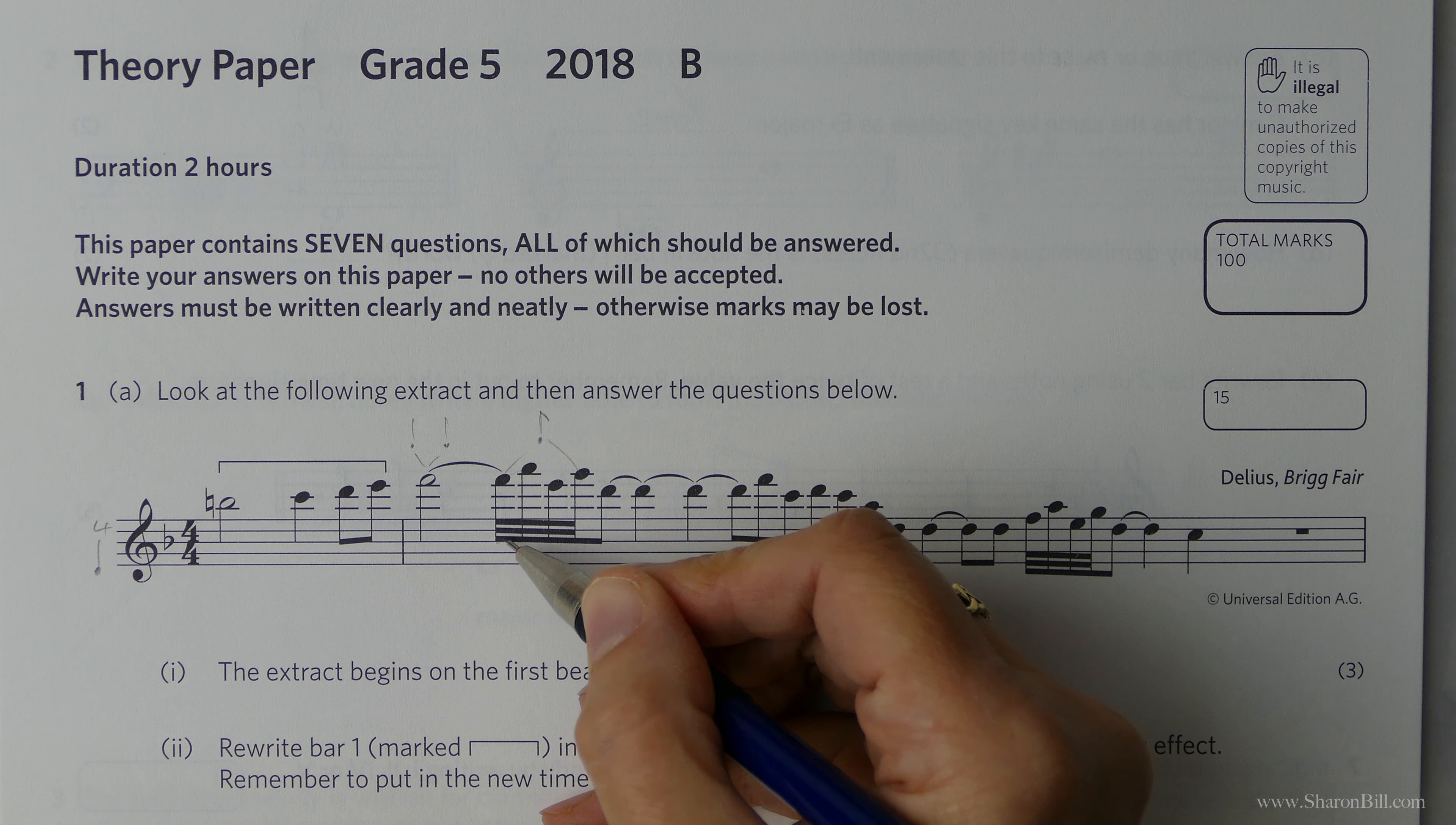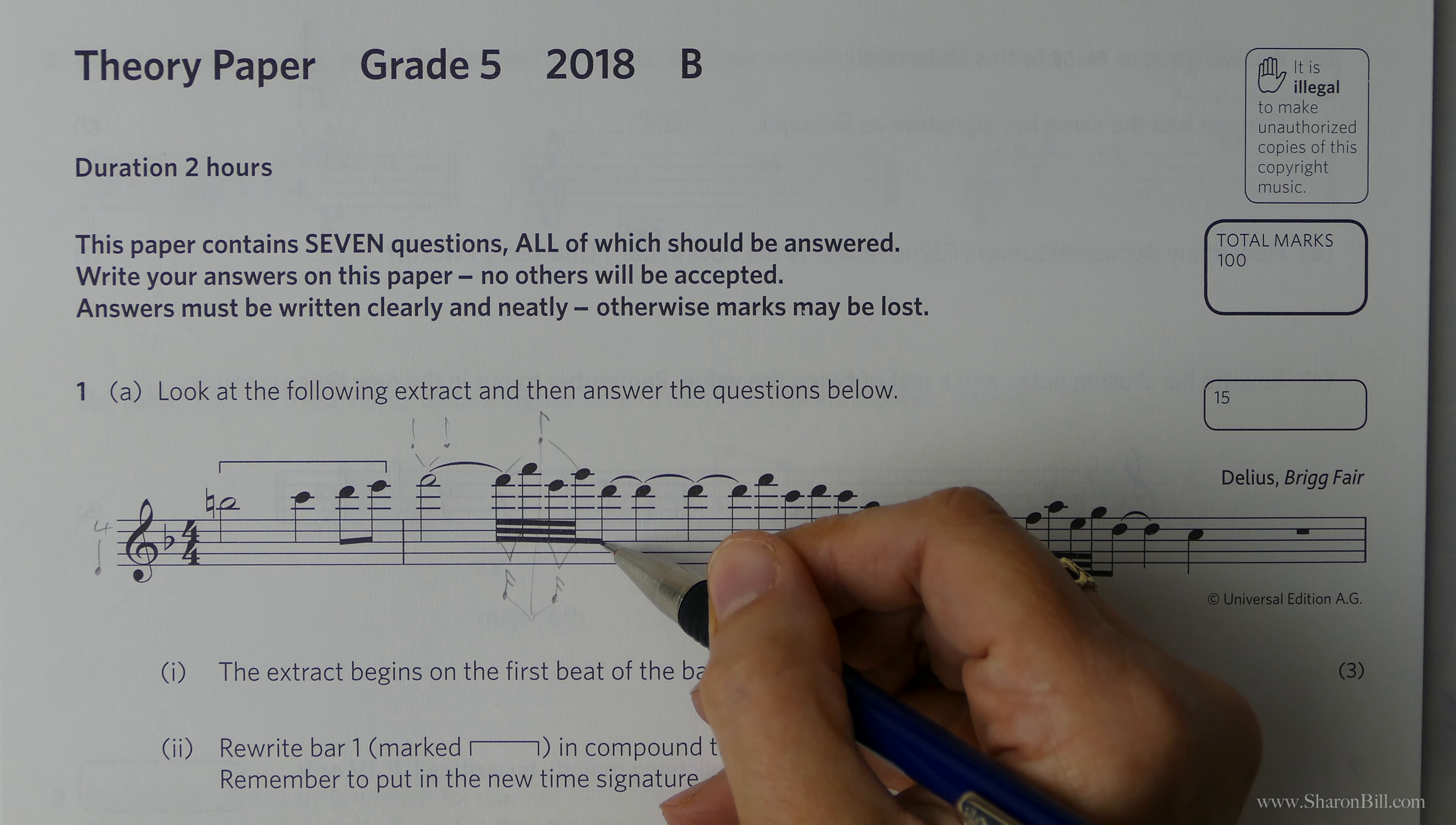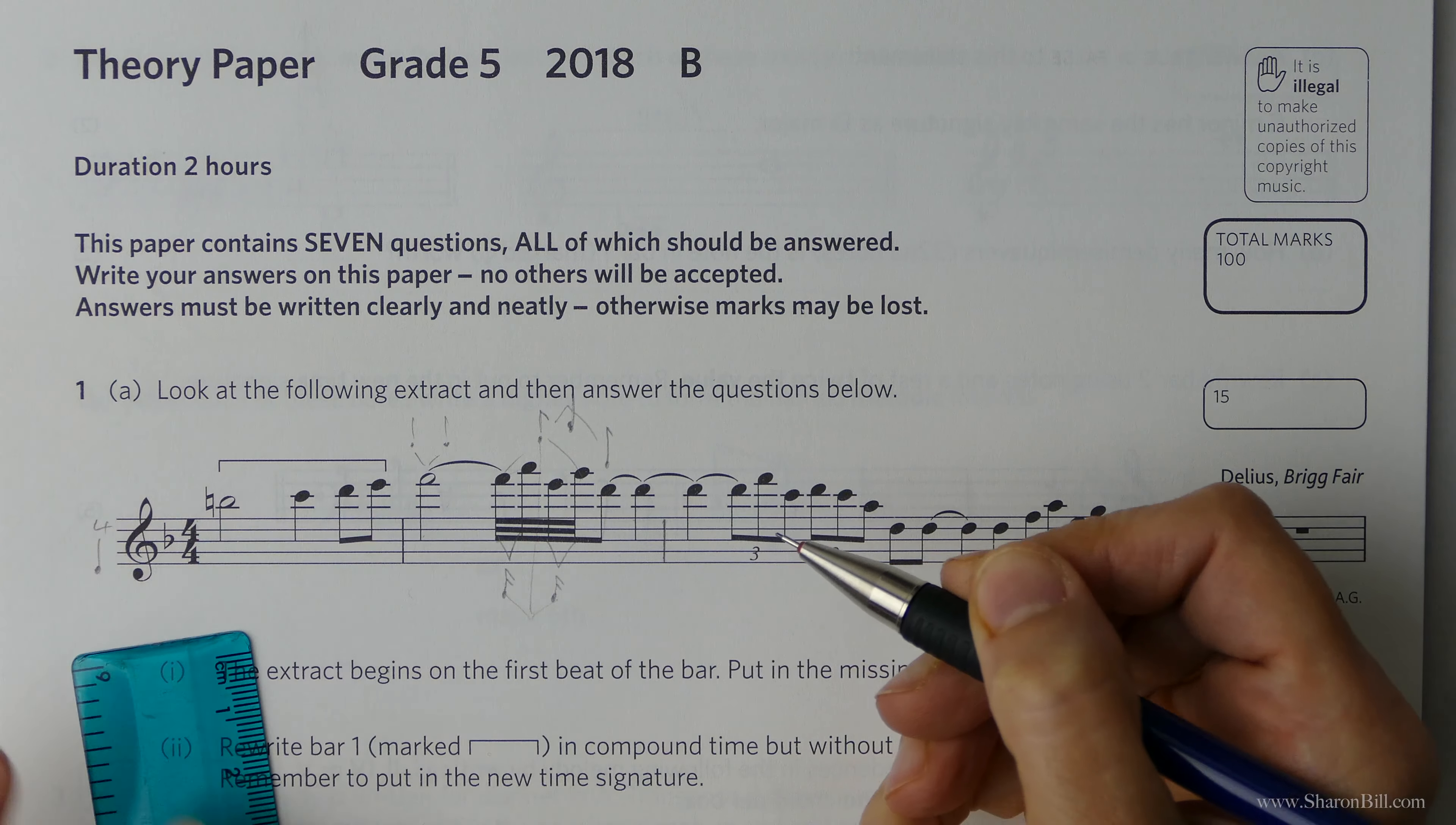We'll tend to think that 2 demi-semis equal a semi-quaver or 2 32nd notes equal a 16th note. And then those 2 will give us our quaver, our 8th note. And then here is our other quaver to complete that crotchet beat, that quarter note. So 1, 2, 3 beats so far. There's beat 4. And so we put our bar line in there.